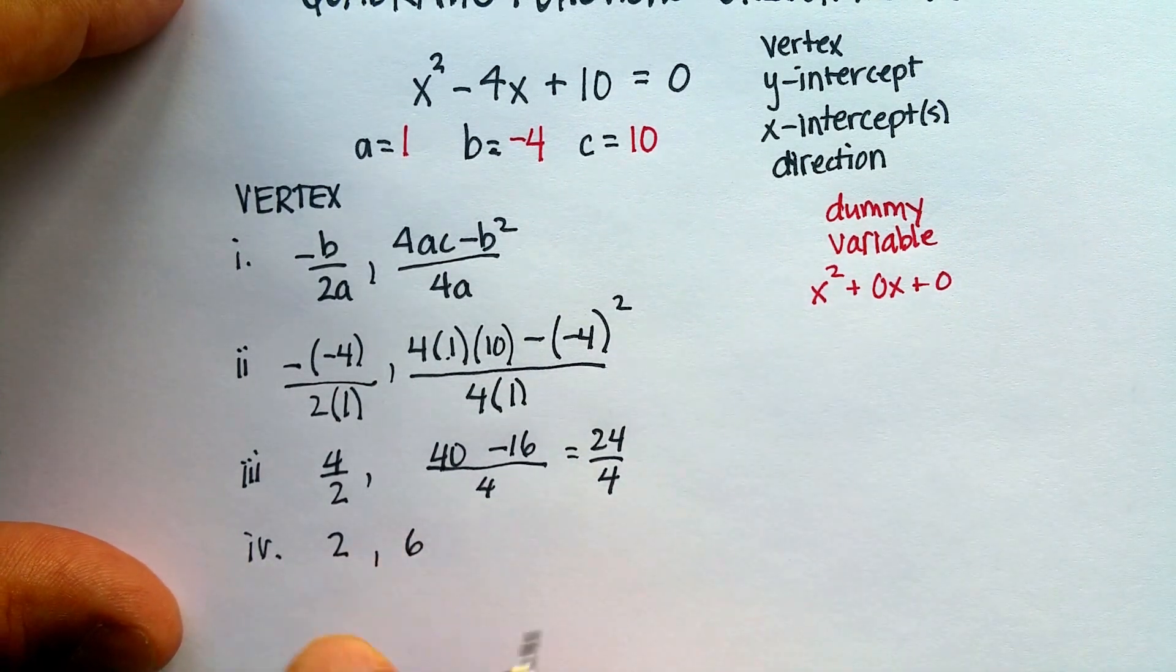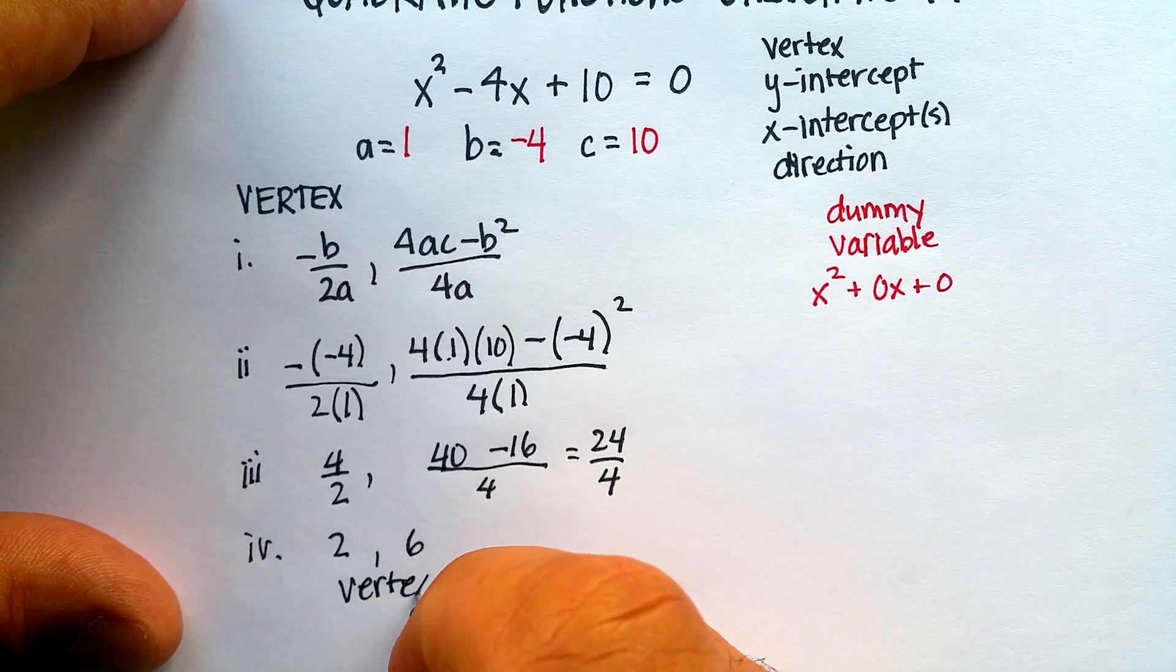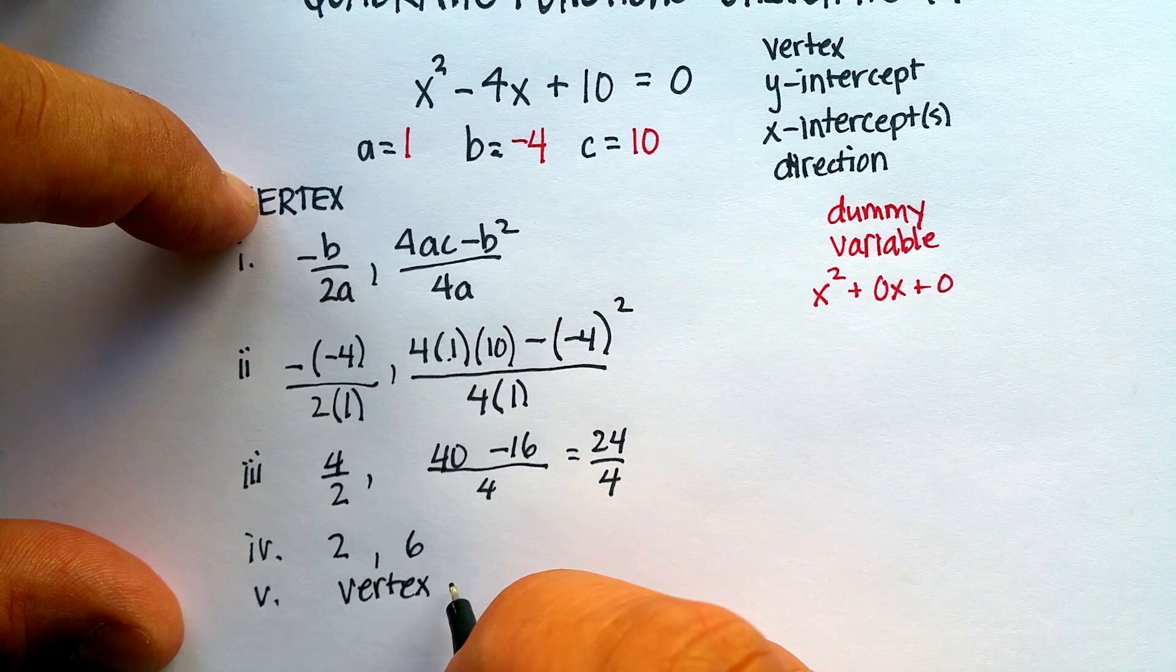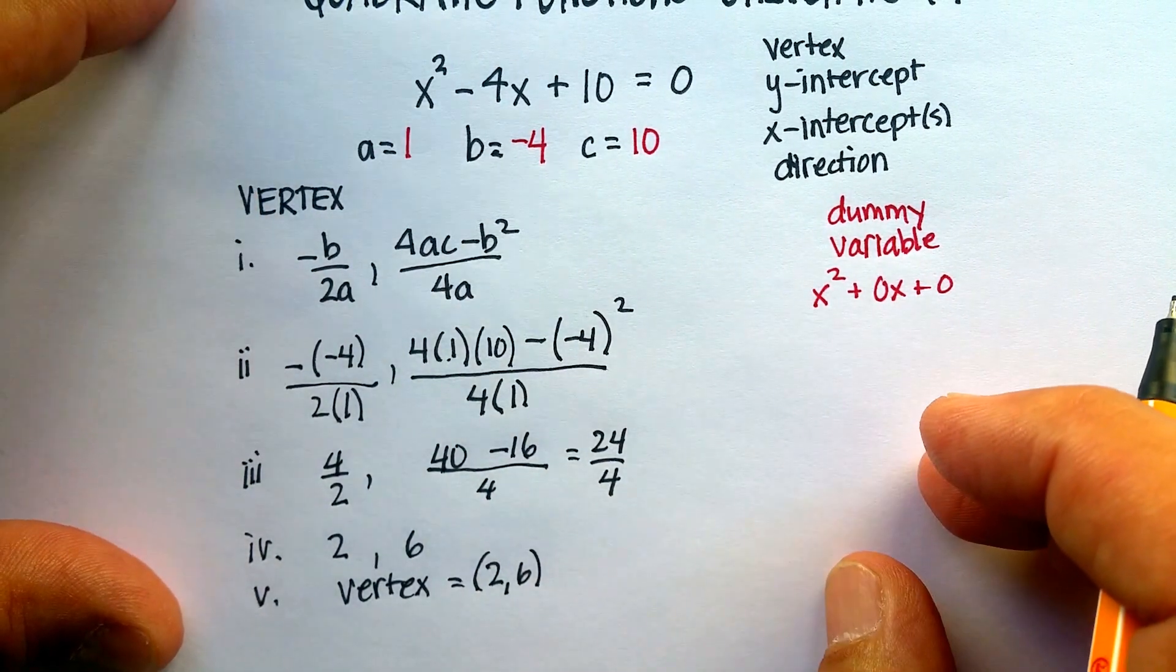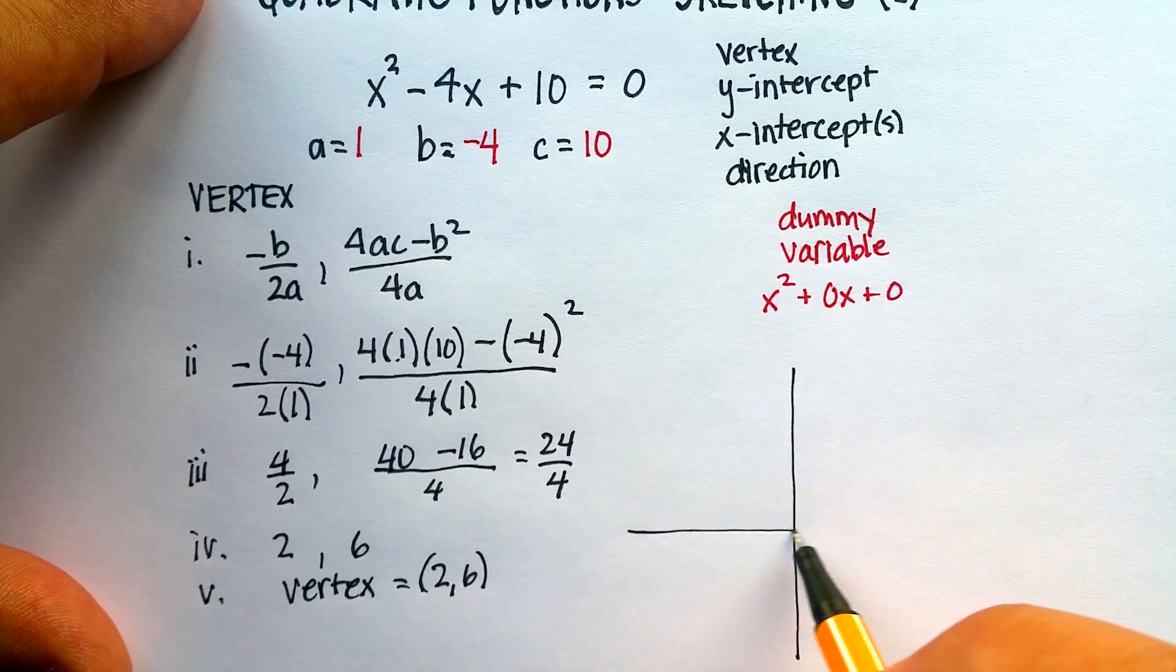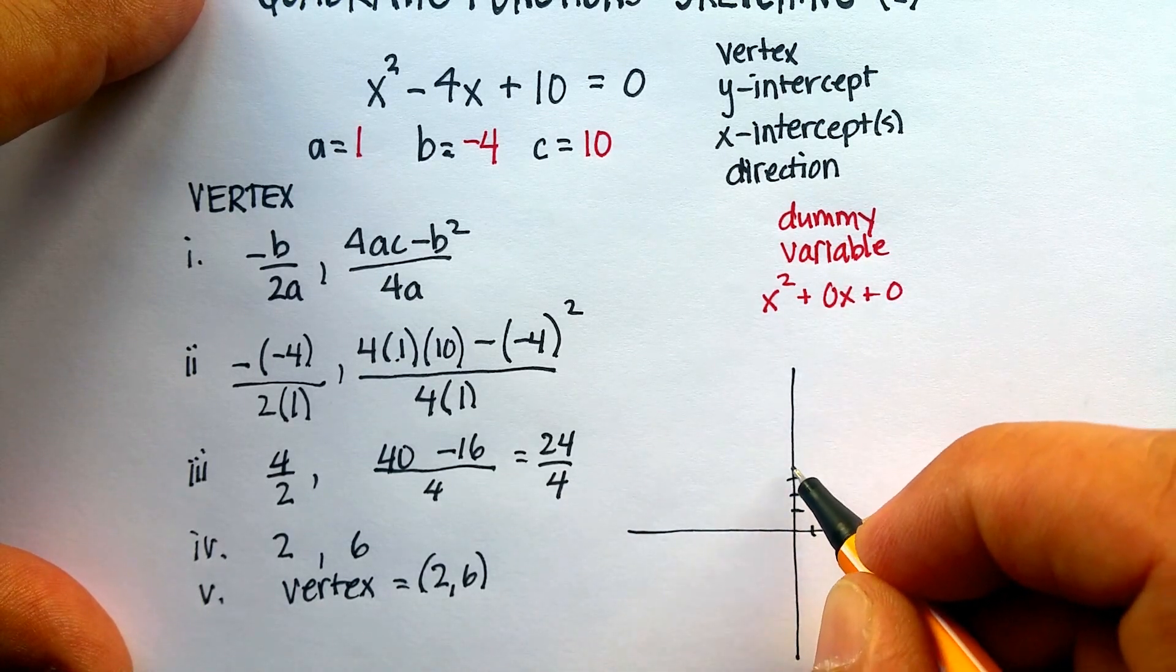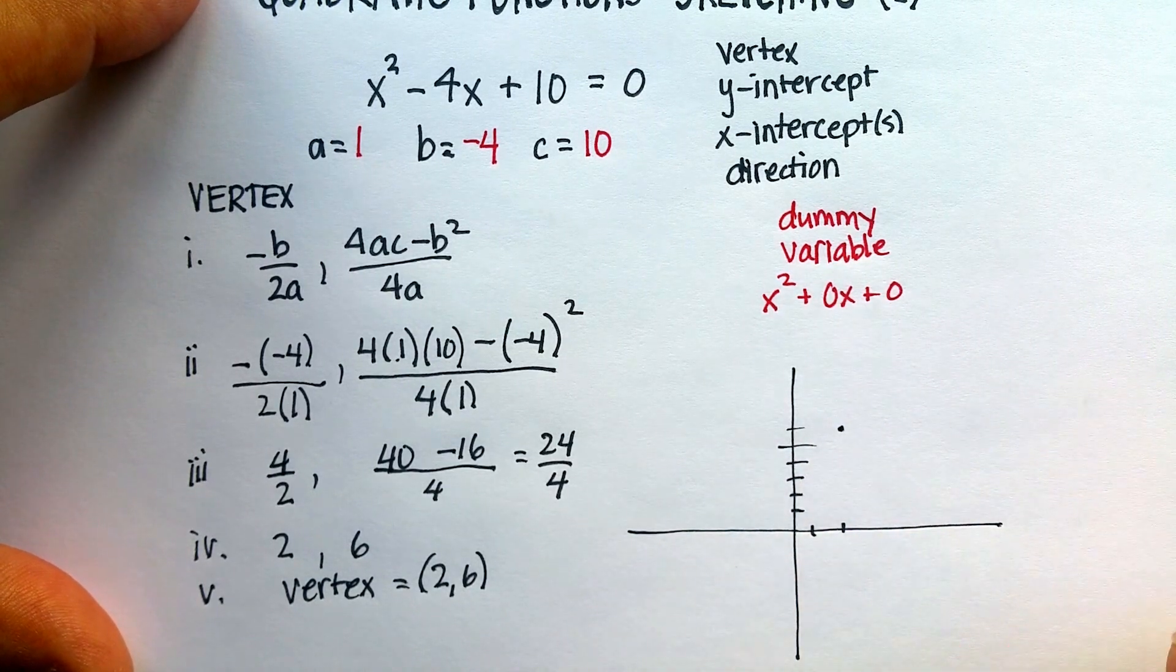In terms of a quick sketch, I know that my vertex is at the point 2, 6. Let me do a quick sketch. Drawing axes: 1, 2 on the x-axis, 1, 2, 3, 4, 5, 6 on the y-axis. The vertex is right there.